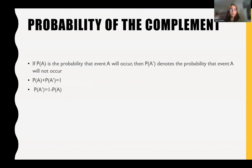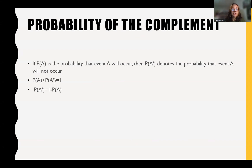Now let's talk about the probability of the complement. The probability of the complement is defined as: if P(A) is the probability that event A will occur, then P(A') denotes the probability that event A will not occur. For example, if I'm talking about the probability of it raining today, then the probability of the complement is the probability of it not raining today.